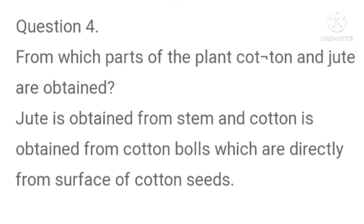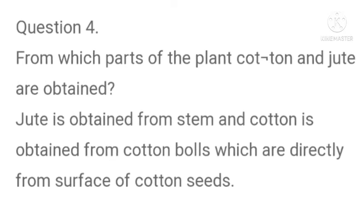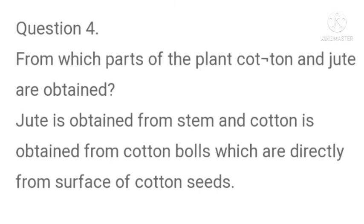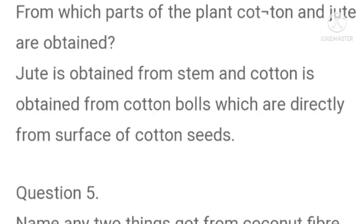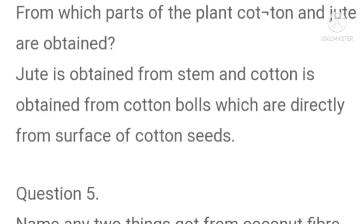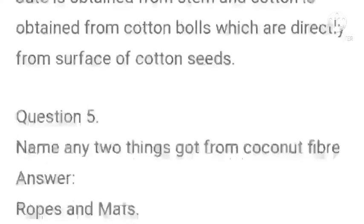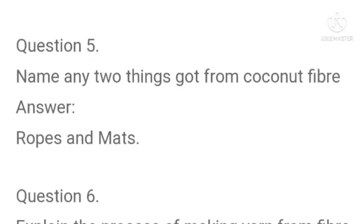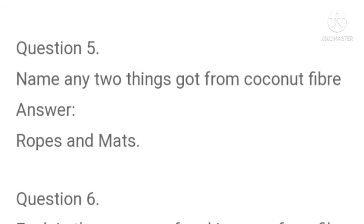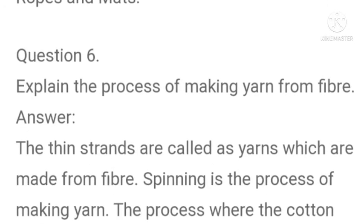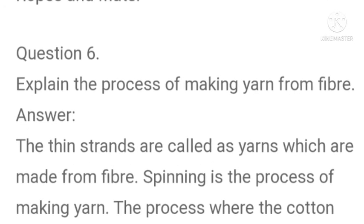Question number four: From which parts of the plant are cotton and jute obtained? Answer: Jute is obtained from the stem, and cotton is obtained from cotton bolls, which are directly from the surface of cotton seeds. Question number five: Name any two things got from coconut fiber. Answer: Ropes and mats.